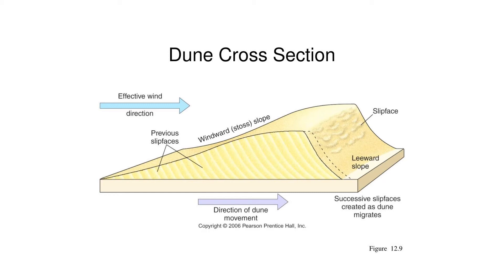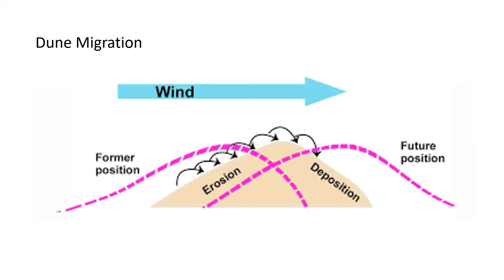These sediments are moved up the windward side, also known as the stoss slope. The sediments will continue to move up the forward slope until the top angle reaches about 34 degrees. At this point, the sediment will no longer be well supported and will avalanche down the lee or slip face side. This continued process of avalanching is what causes cross-bedding in sedimentary rocks, eroding old dunes and leaving behind cross-bedding in a mostly horizontal layer.